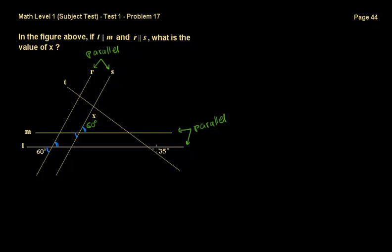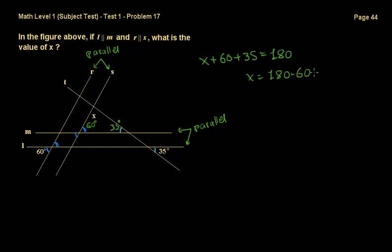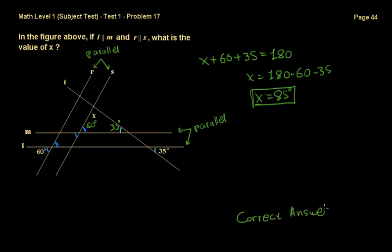Since this angle over here is 35 degrees, and L is parallel to M, these two angles are alternate exterior angles formed by a transversal cutting two parallel lines — so they are equal, meaning this angle is also 35 degrees. Now in any triangle, the angles add up to 180 degrees. So x plus 60 plus 35 equals 180, giving x equals 180 minus 60 minus 35, which is 85 degrees. The correct answer is C.